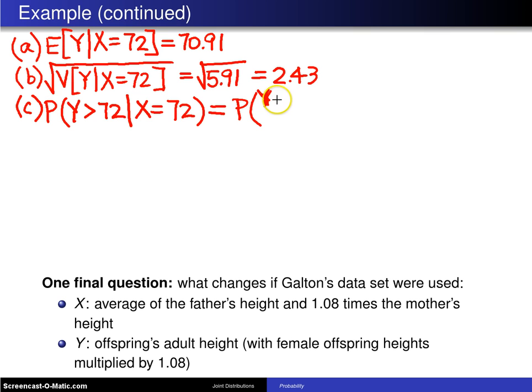So this is the probability that Y minus 70.91, that's the conditional mean height of the son, divided by the standard deviation, which is 2.43, is greater than 72 minus 70.91, divided by 2.43. Now what has been done is this inequality right here has had its conditional mean and its conditional standard deviation brought into the mix. So we have already used this given X equals 72 portion. So all we have to do is calculate that probability.